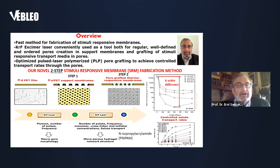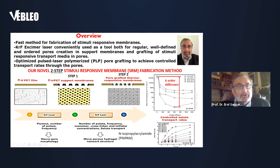Our method involves two steps. It's a novel method, different from the currently applied procedures. First, we use a support membrane — I will give you examples of polyimide (PI) or polyethylene terephthalate (PET) films today. We perforate these films using excimer laser by ablation. For this purpose, we use a 248 nanometer krypton fluoride laser. The process parameters are fluence, number of pulses, and frequency. By this ablation, a very well-behaved pore structure is obtained in macro size — a macro pore morphology created in this manner.